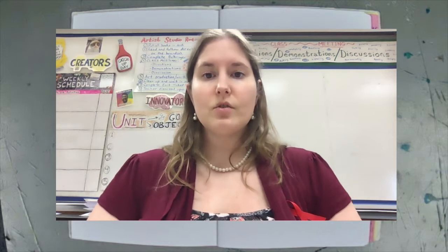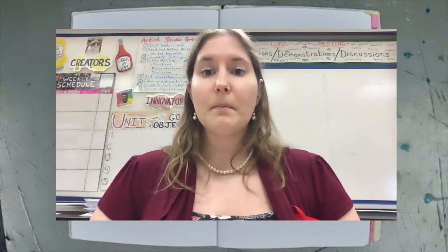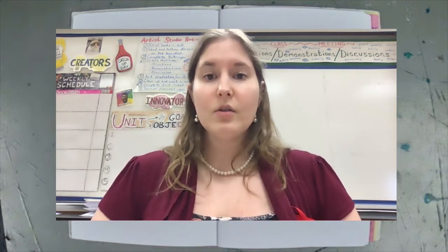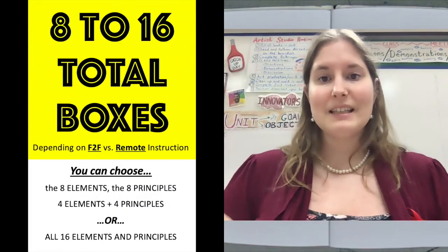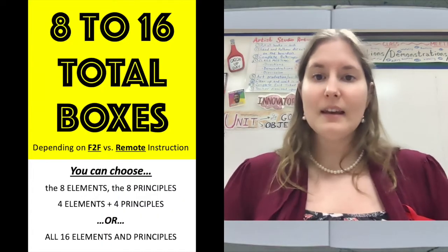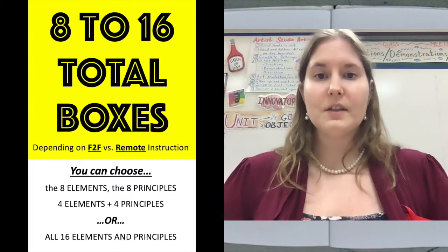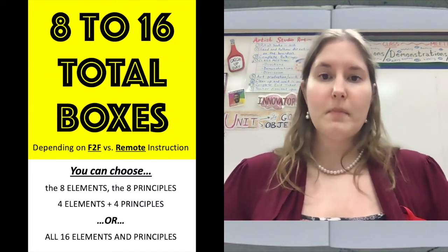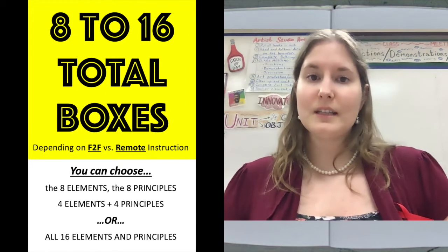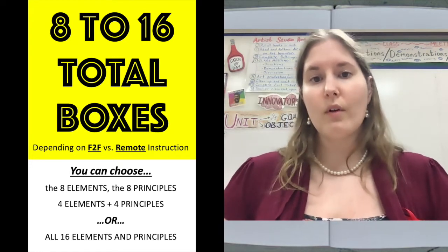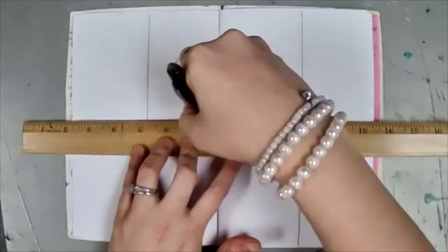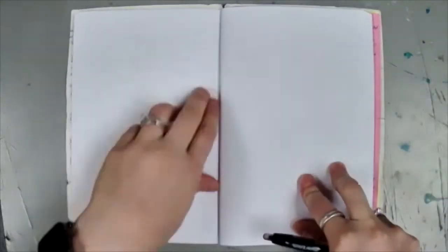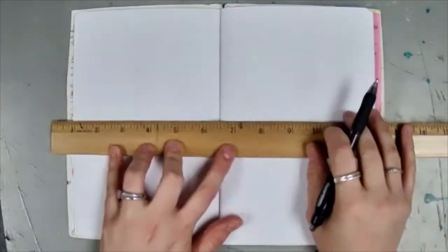The first step is to draw all the lines to create your boxes. When you make your boxes, you're going to have a total of about 8 to 16, depending on the options I give you for this project. Some quarters may only do 8, some may do 16, depending if we're remote or face to face. You'll need to take a ruler or a flat piece of paper and split up all of your pages into 4 by 4.